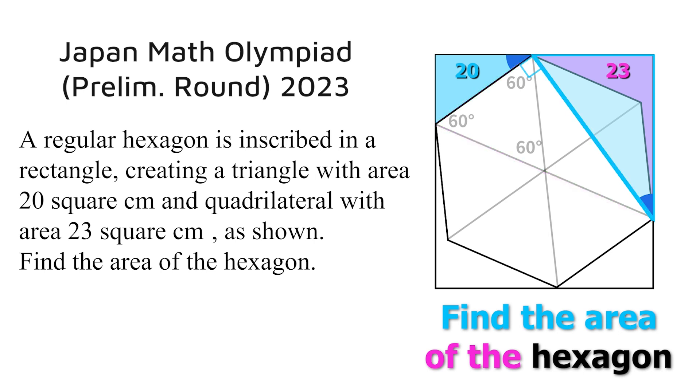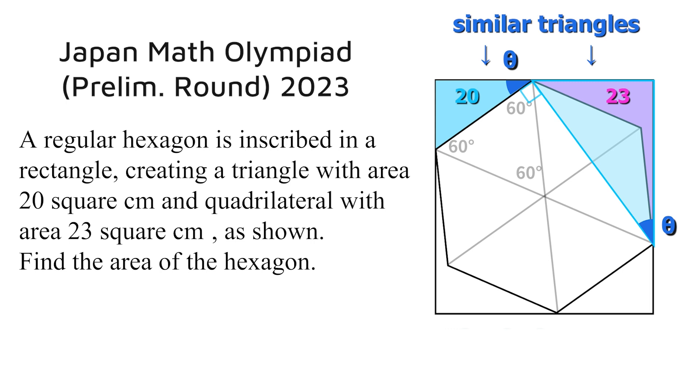Not only that, this right angle triangle must be similar to this blue one because this angle here is 90 minus theta, meaning this angle must be theta, giving us a pair of similar triangles.